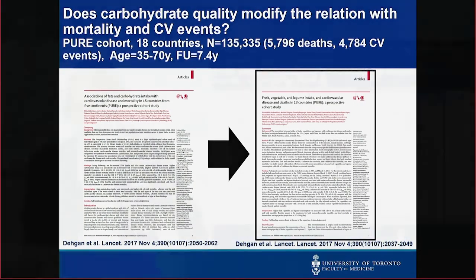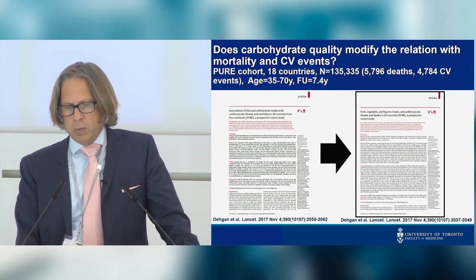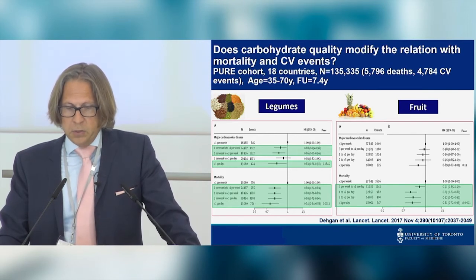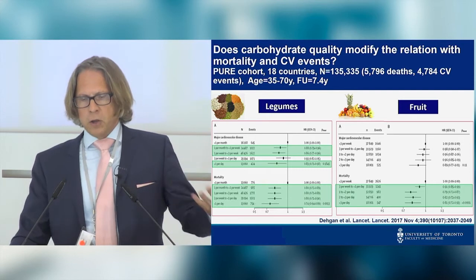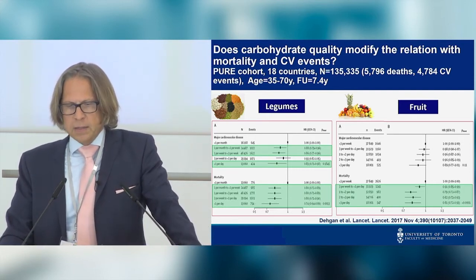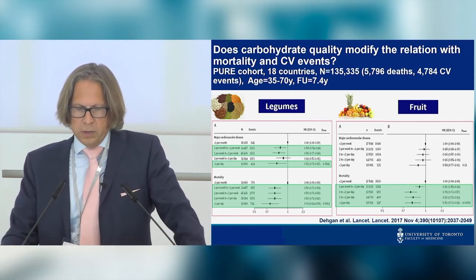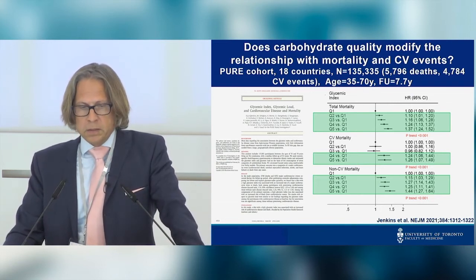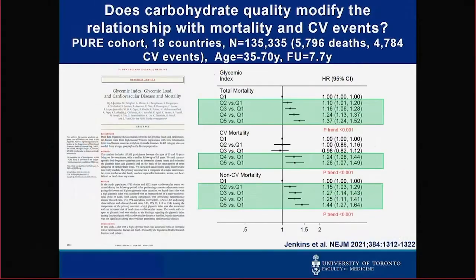In the same issue of The Lancet, another paper that got no media attention started breaking it down by markers of carbohydrate quality — showing that things like legumes and fruit had associations in the opposite direction: decreased risk rather than increased risk. This suggested that not all carbohydrates are equal. A later PURE analysis by my mentor David Jenkins, who invented the glycemic index concept in 1981, showed increased risk with higher glycemic index for CV events, CV mortality, and all-cause mortality.